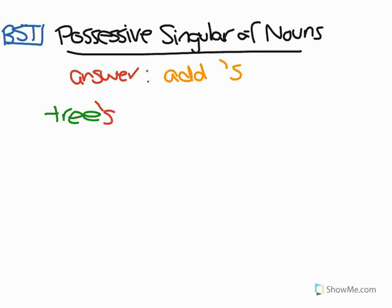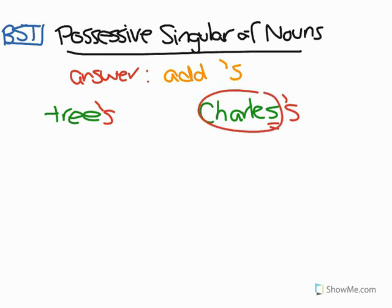It gets harder with a word like Charles. What we often want to do is just put an apostrophe on the end and say that that is the possessive singular of Charles. This is incorrect. We need to add apostrophe-s, despite the fact that Charles ends in an S. So the possessive singular of Charles is Charles's.